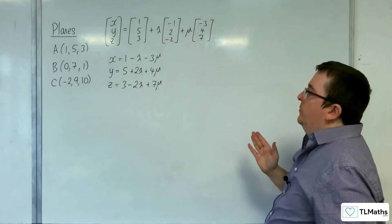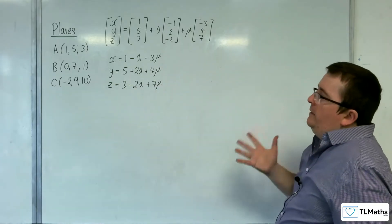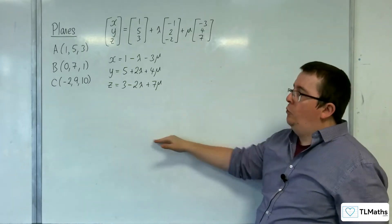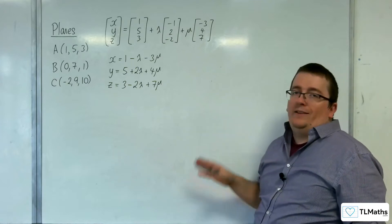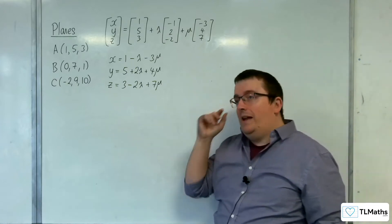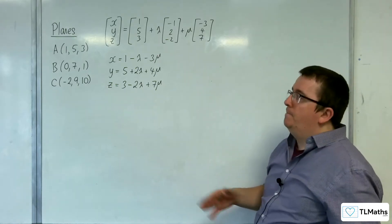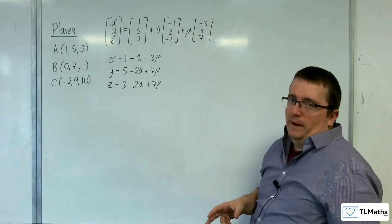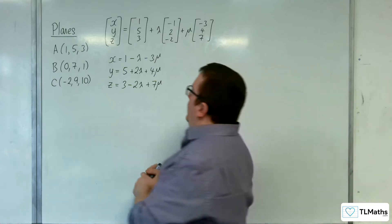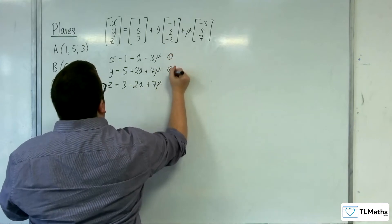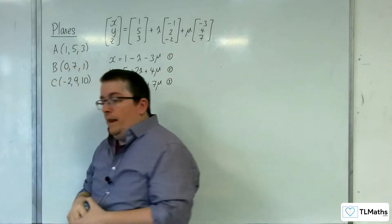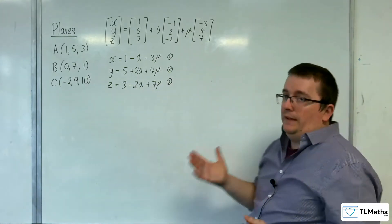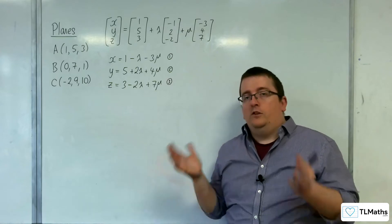What we're going to do is we are going to aim to eliminate the two parameters, the lambda and the mu, because we want to get to one equation that just has x's, y's and z's. Now, when we had this before with the equation of a line, that was much more straightforward. But now that we've got lambdas and mu's, it's a little bit more problematic. So let's call these equations 1, 2 and 3. Now, before we go any further, if you have met the vector product already, you might be shouting at me, use the vector product.